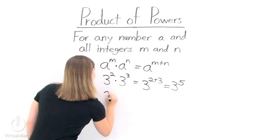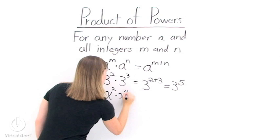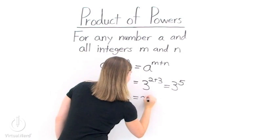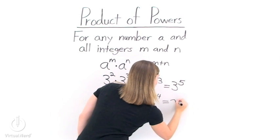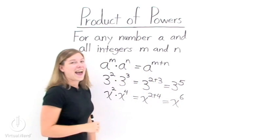One more. x squared times x to the fourth. We put an x as our base and then add together our exponents 2 and 4. This gives us x to the sixth.